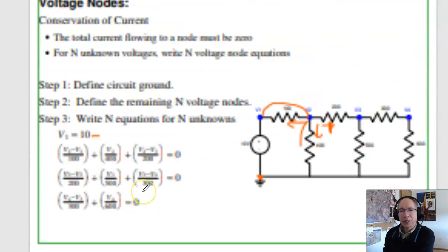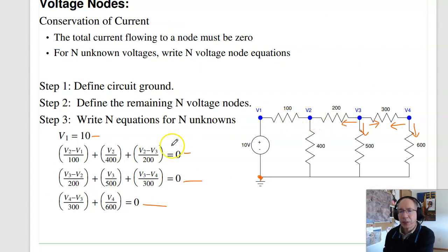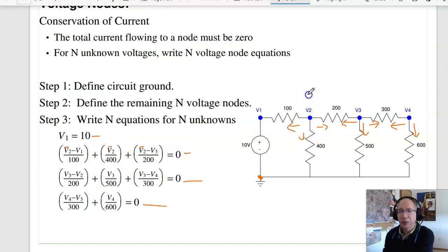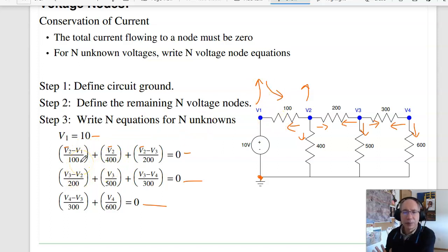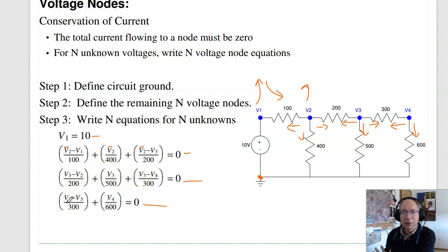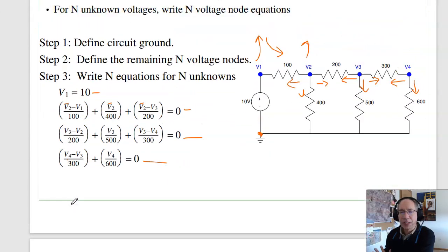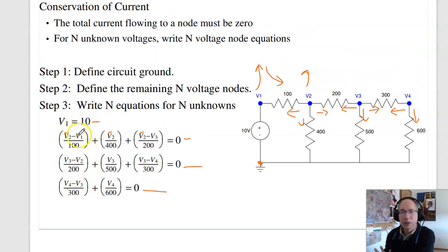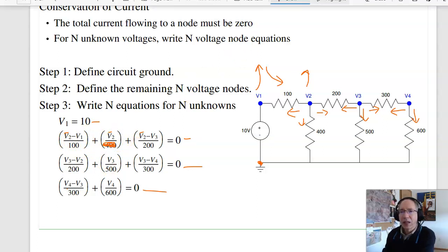A couple shortcuts to check for sign errors: when writing node equations, at node two all the V2s are positive and everyone else is negative. If I raise the voltage on node two, current flows out — that's the plus V2. If I raise V1, current flows in — that's the minus. Likewise at node three, all V3s are positive, everyone else negative; same at node four. Also, units must match — volts over ohms is amps, so I'm adding amps plus amps plus amps. If I had amps plus volts, I know there's an error.